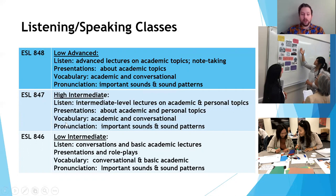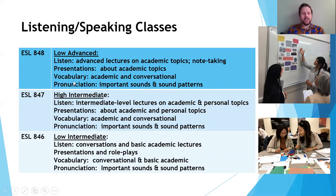In ESL 847, you also learn academic and conversational vocabulary, just at a higher level, and the listening is higher level as well. You will listen to intermediate level lectures on academic and personal topics. Finally, in our highest level, ESL 848, low advanced, the listening is more advanced. You will listen to advanced lectures on academic topics and learn note taking strategies, continue to do presentations on more academic topics, and develop academic and conversational vocabulary. These classes also have a small pronunciation element, but we offer separate pronunciation classes if you want to focus more carefully on pronunciation.